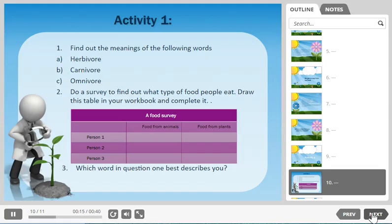Then do a survey to find out what type of food people eat and complete the table below. So you're going to draw this table into your workbook. You're going to interview three people and write down what food do they eat that comes from an animal and what food do they eat that comes from a plant.